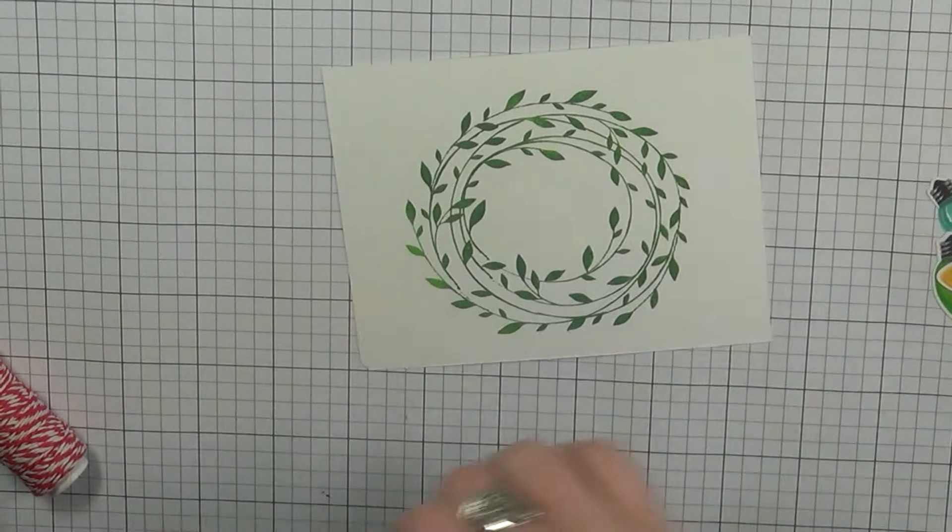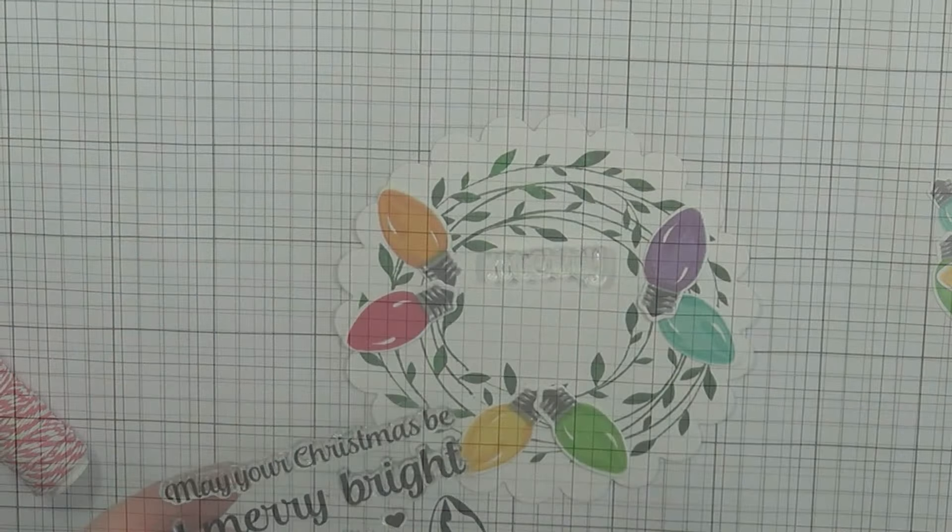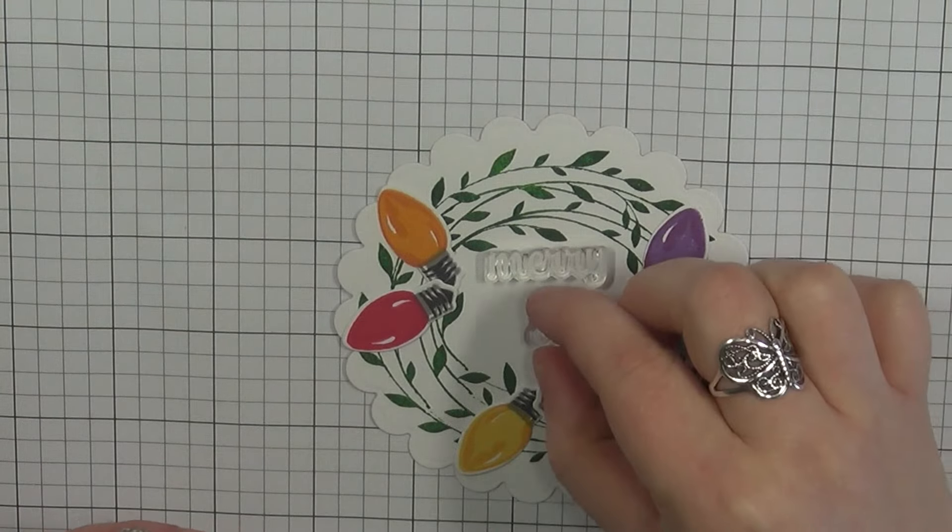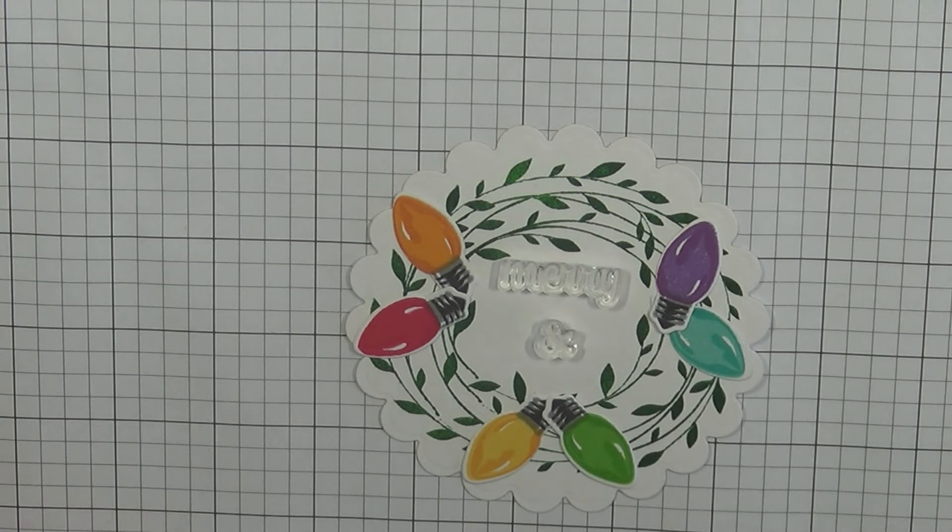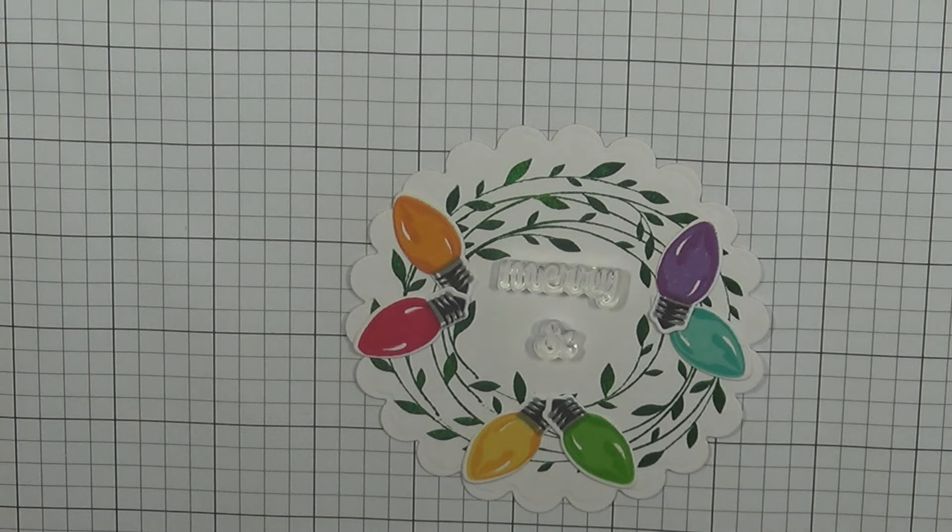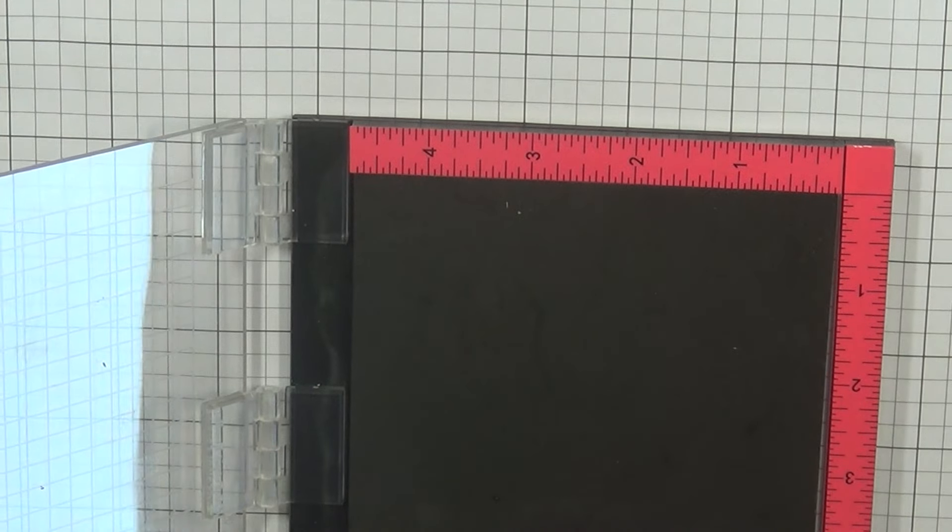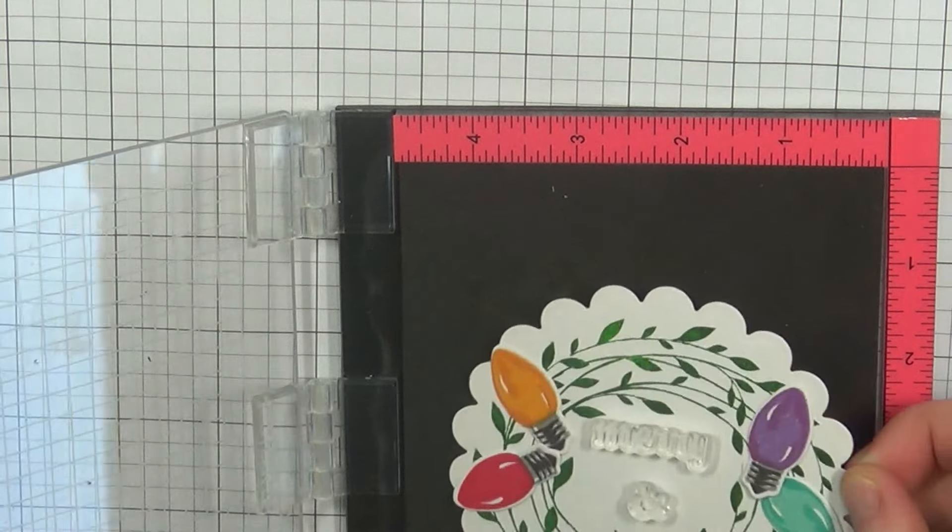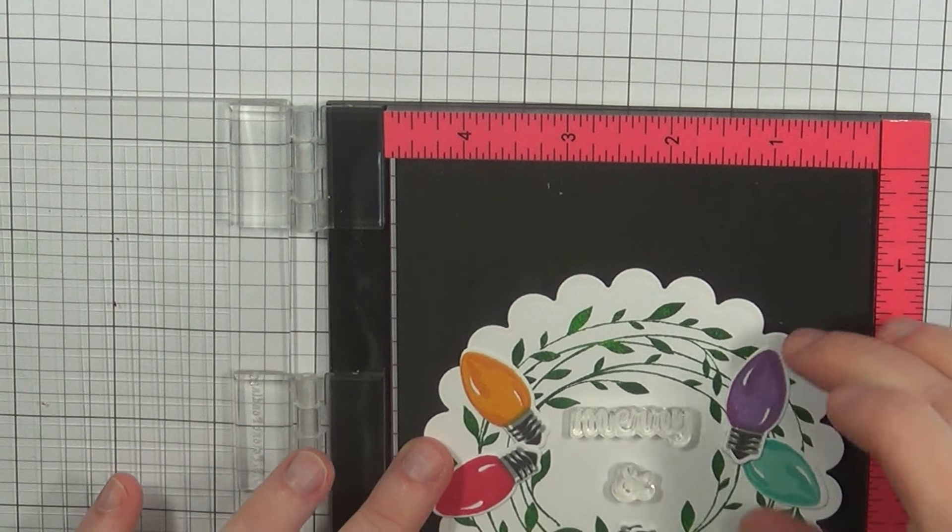So I decided to go ahead and die cut my little wreath here. These are some older dies that I've had, these are from Spellbinders, they're just your basic scallop circle. I've been meaning to go ahead and get the ones from Lawn Fawn but these work just as well too. So that's why I die cut this out and you see how fun it looks like a real wreath there.